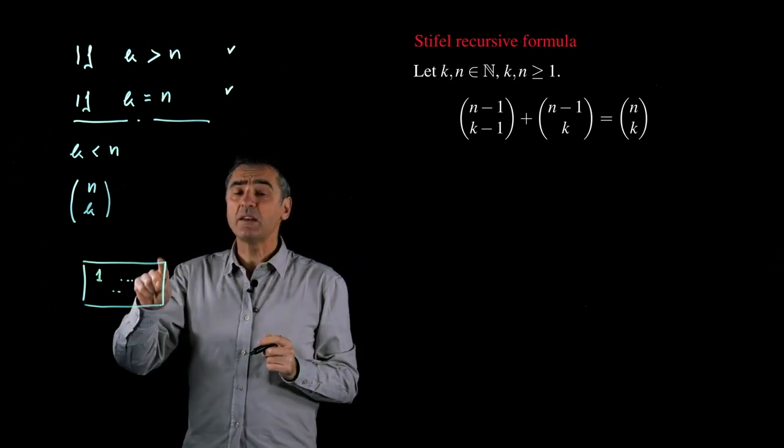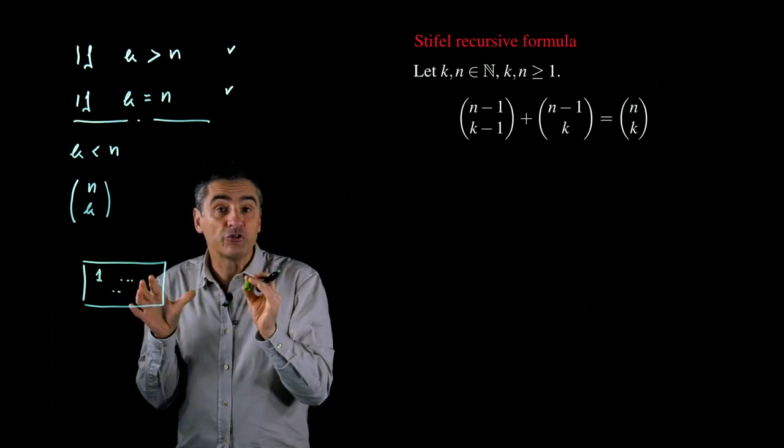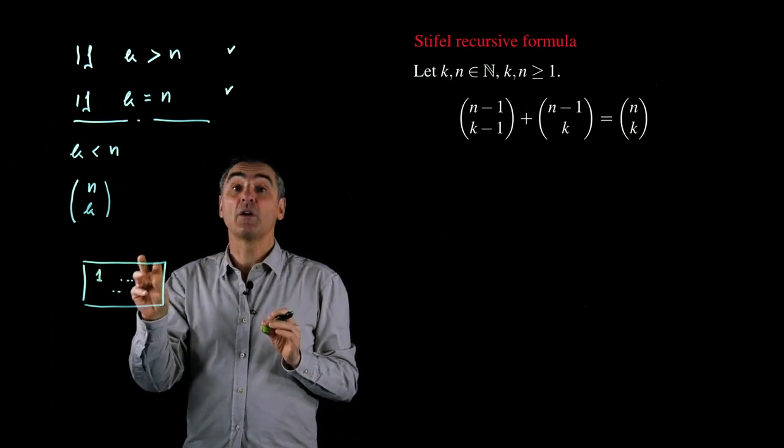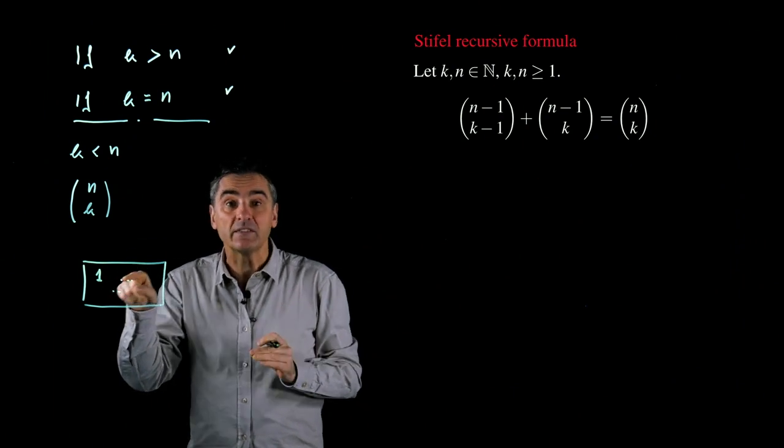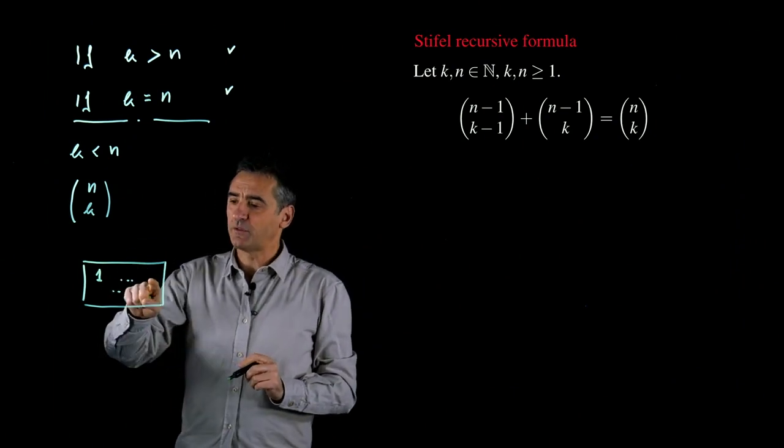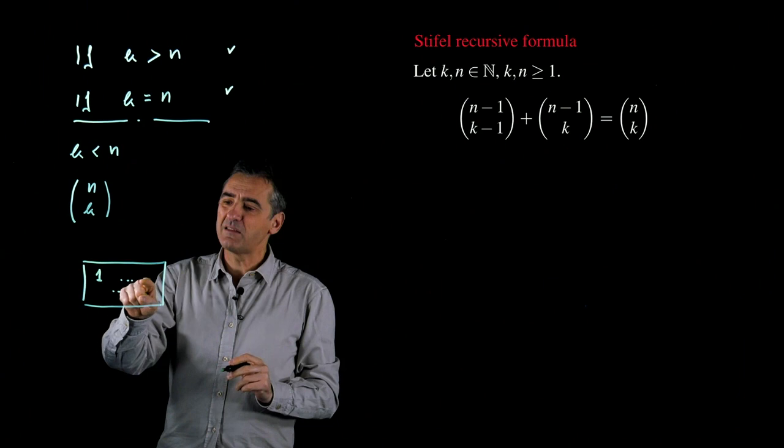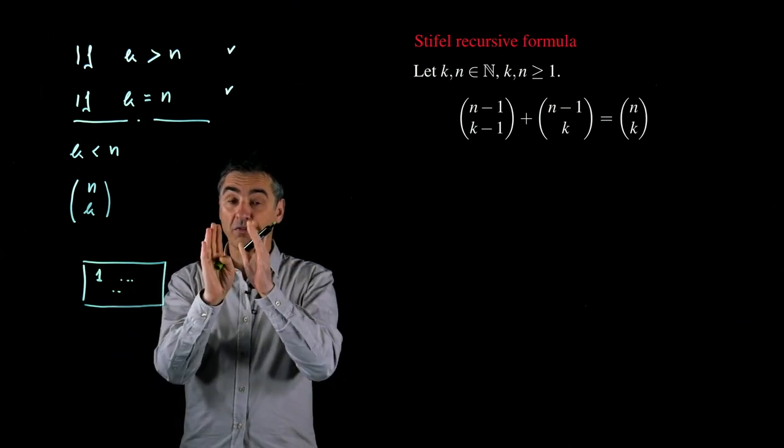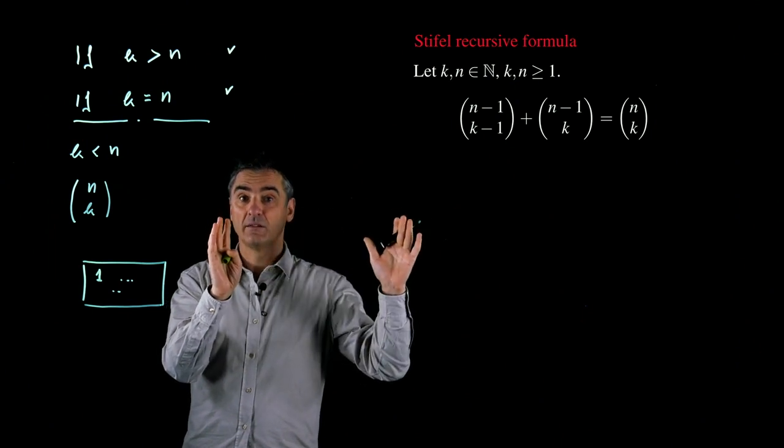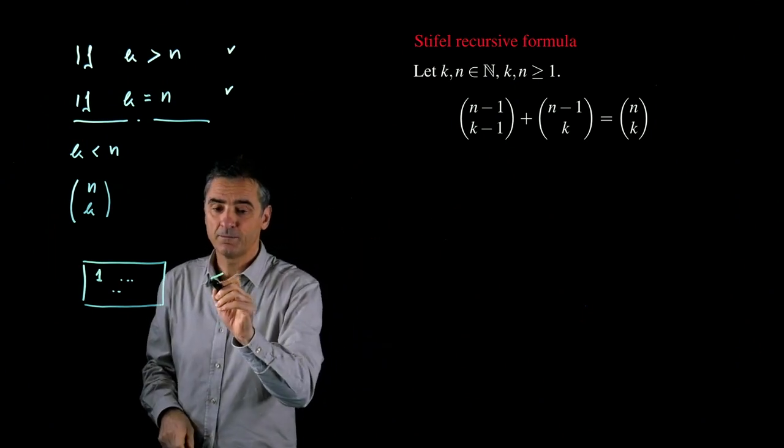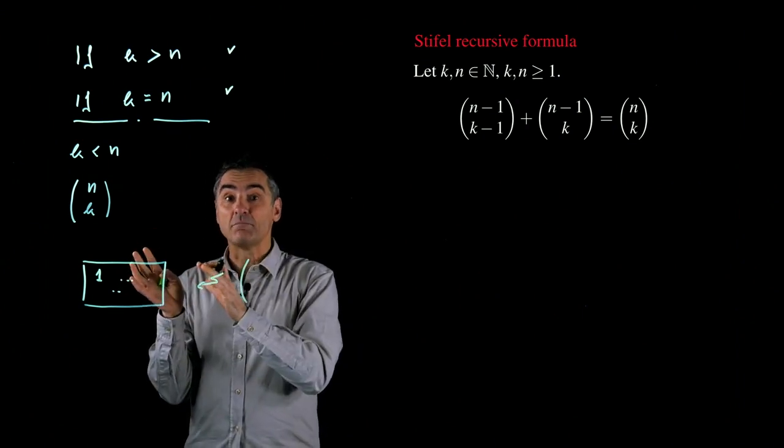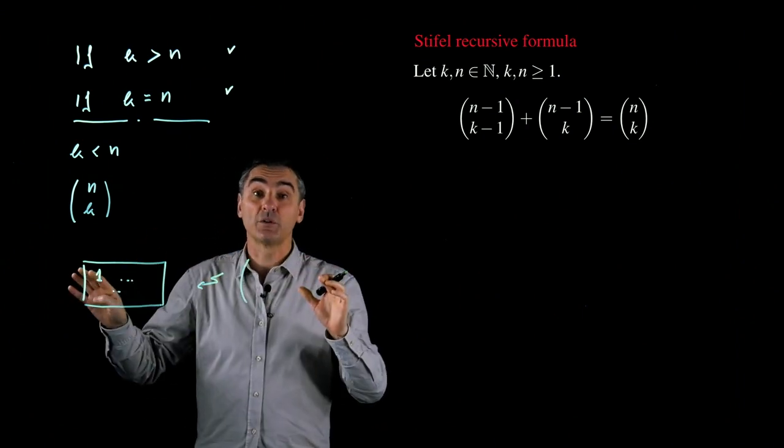In how many ways I can choose k numbers to put in my box if I want that 1 is inside the box? I have to choose other k minus 1 numbers among what? Among 2, 3, 4, until n. Therefore, among n minus 1 numbers, because I have not anymore to consider 1.